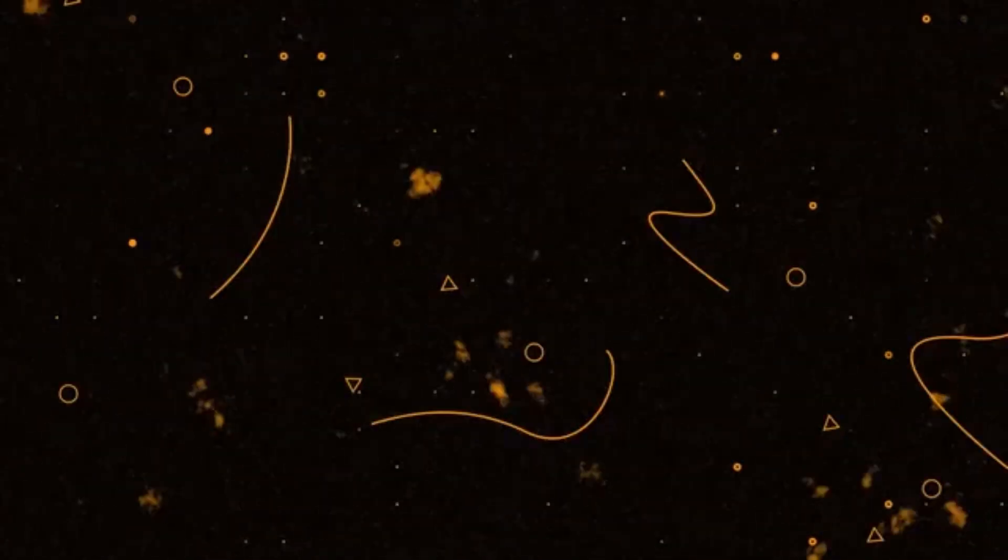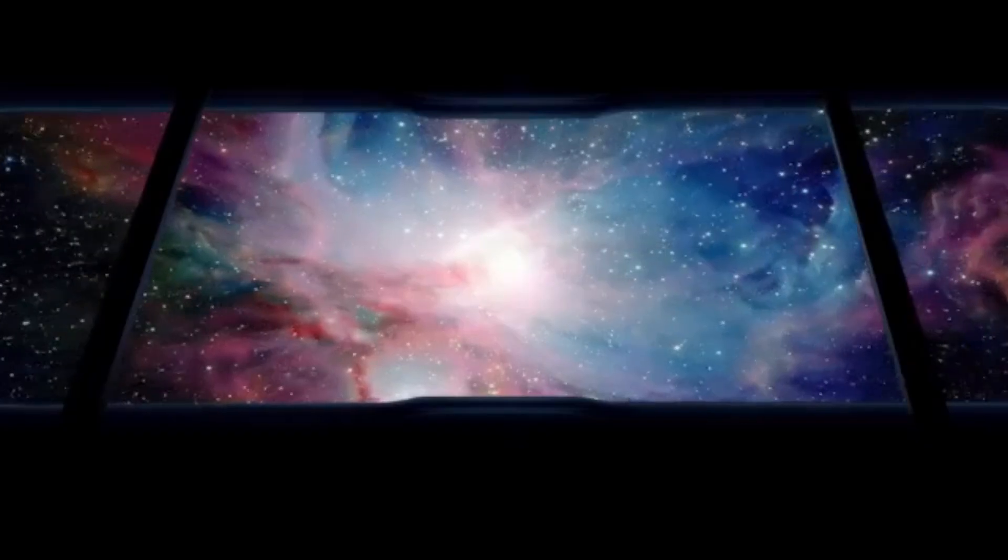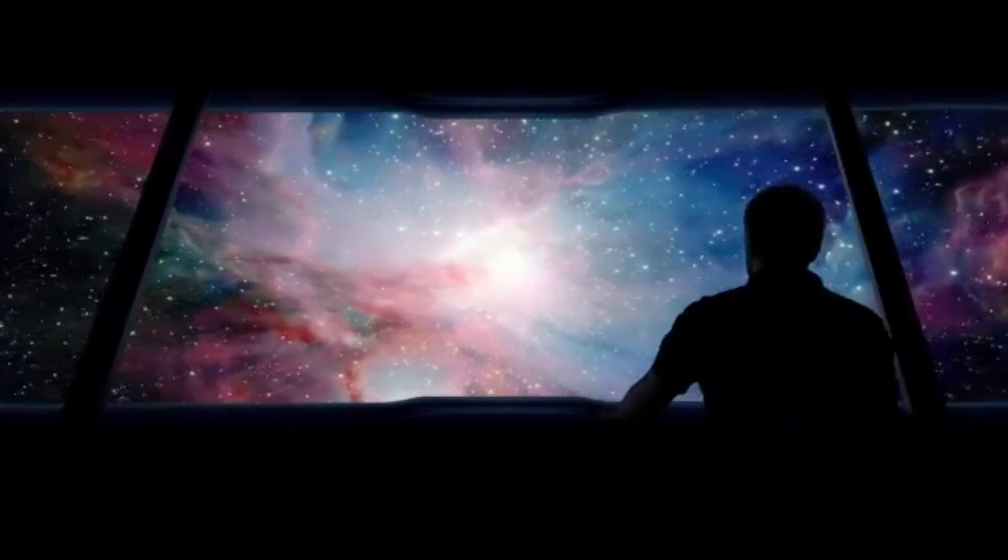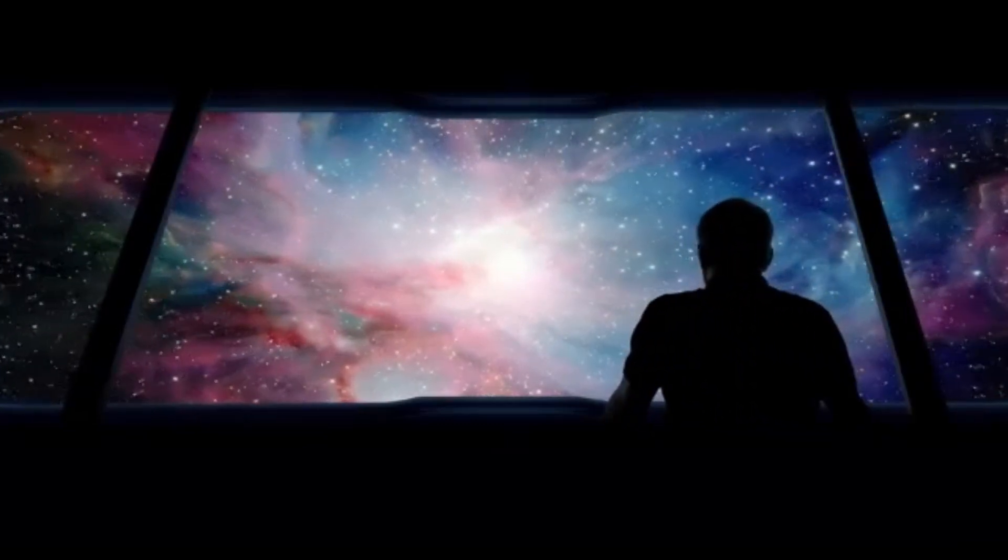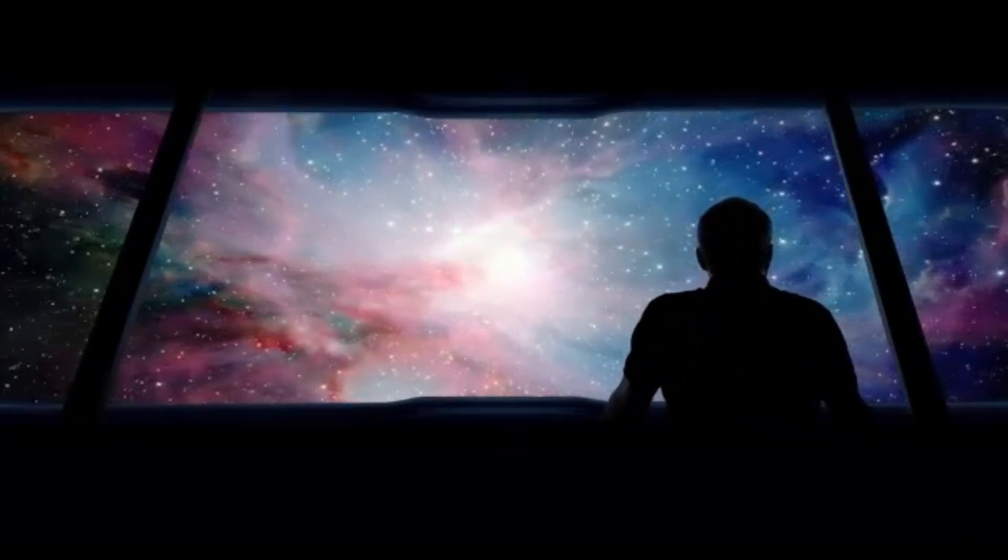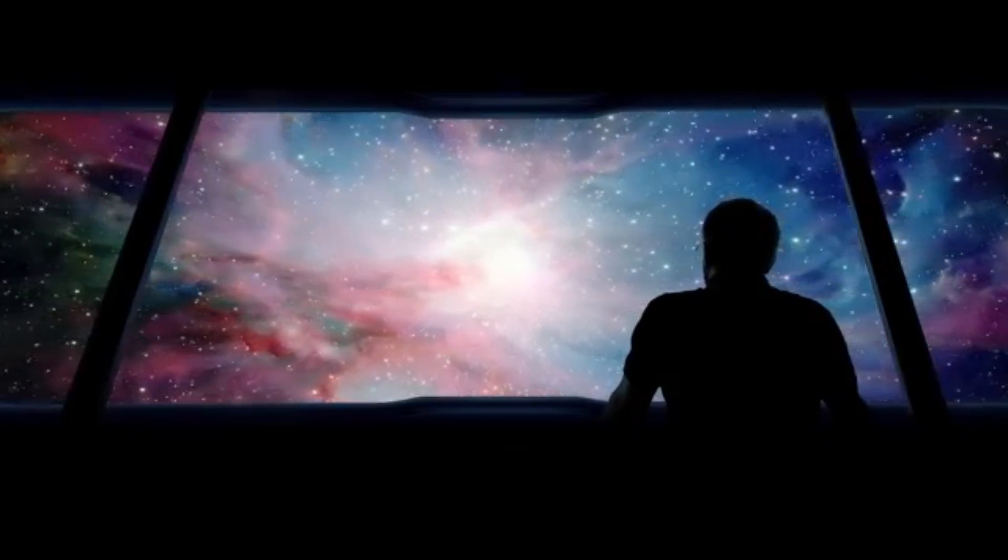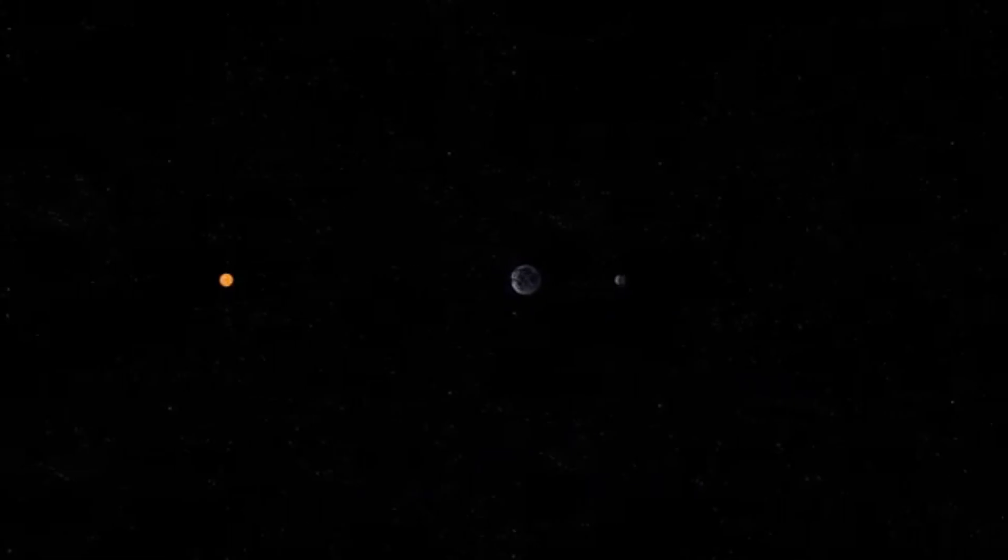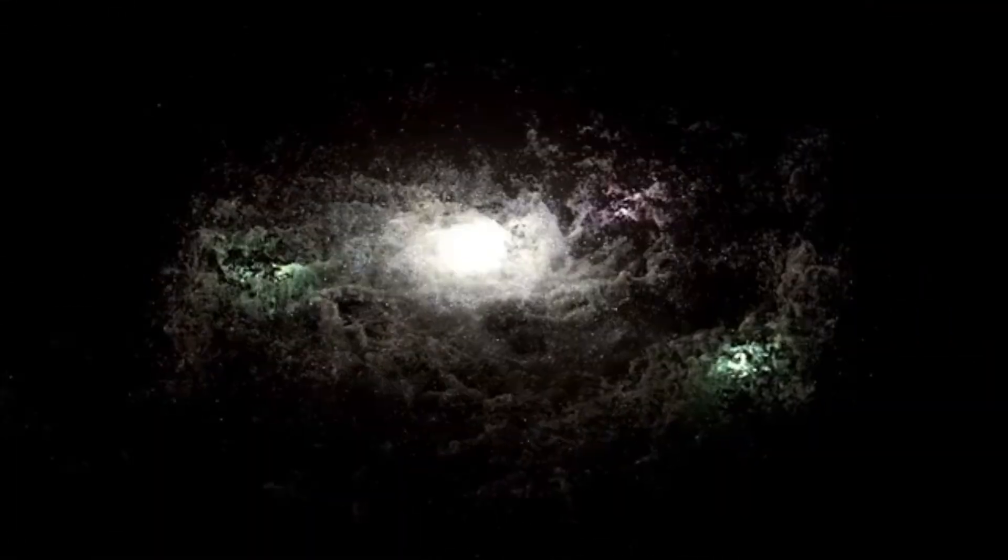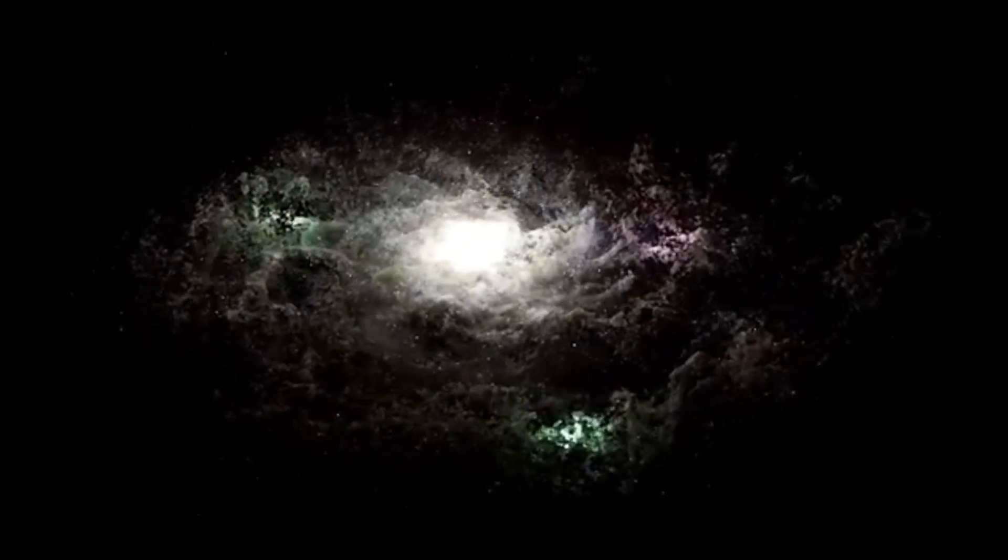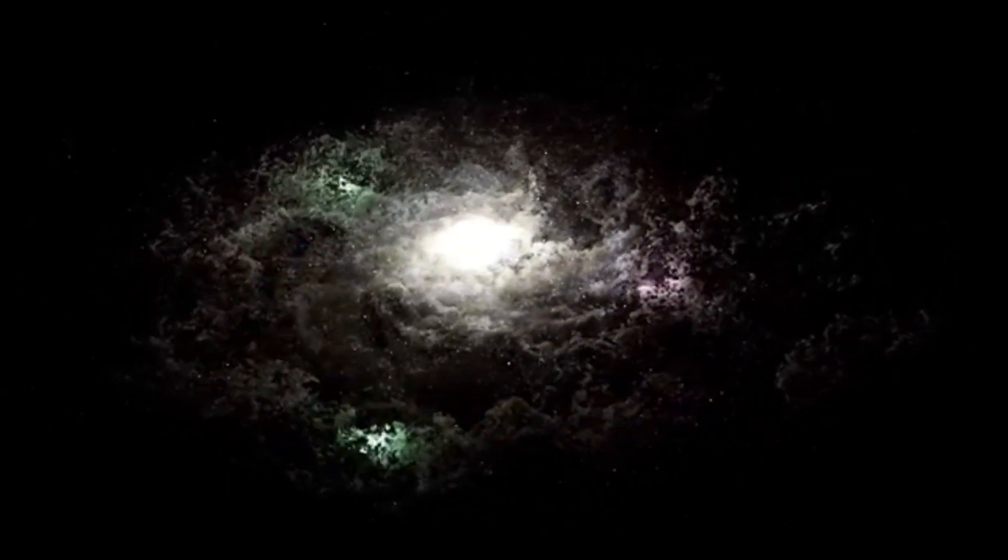To grasp the immense scale of even our own solar system, consider this: If we traveled at a constant speed of 70 miles per hour, it would take about 15 days to complete a single lap around Earth's equator. At that same speed, it would take around 5 months to reach the moon, 63 years to get to Mars at its closest point, and a staggering 4,400 years to arrive at Neptune. These travel times underscore just how vast our solar system truly is.